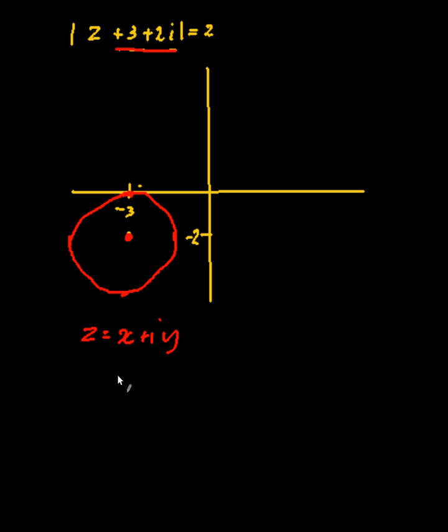You would need to say z is equal to x plus iy, and you need to collect the real and like terms together. So in this case, I will have (x + 3) plus i times (y + 2) has to be equal to 2.